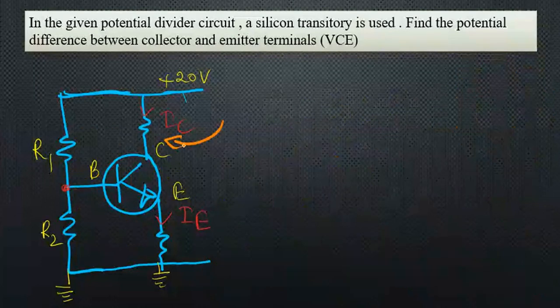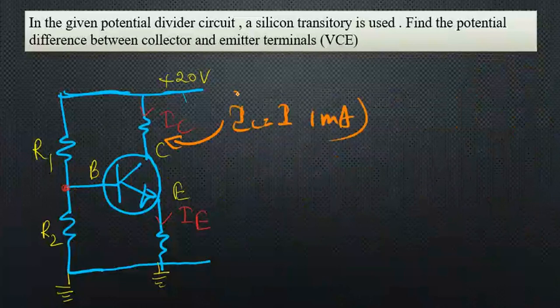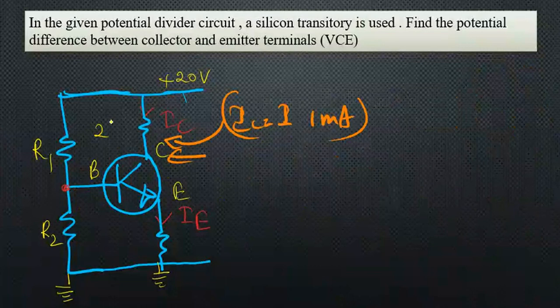Then we can assume IC as 1 milliampere. To find VC, our next step—we see they have given 2 kiloohms.